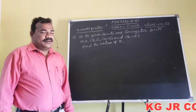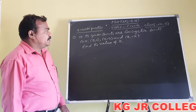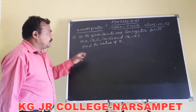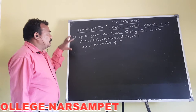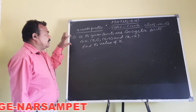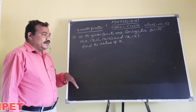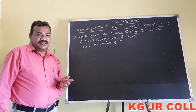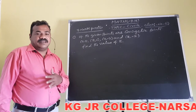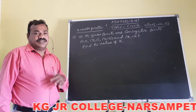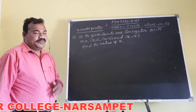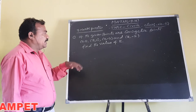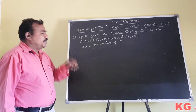Hello students. Today is class number 11. In this class, we are discussing the 7-marks questions. We discussed the circle equation passing through three points in previous classes. So today we are discussing concyclic points.